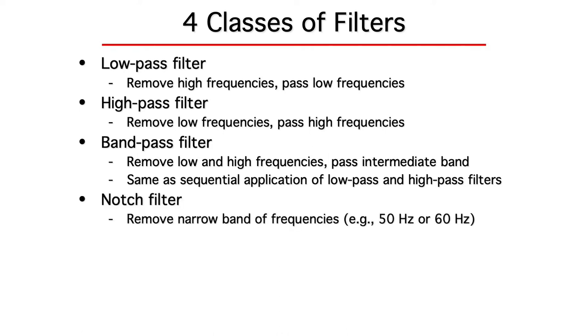Finally, we have notch filters. A notch filter blocks a narrow band of frequencies. For example, if you're in Europe, your AC electricity runs at 50 Hz, and you might want to apply a 50 Hz notch filter to remove the noise induced by the electrical devices in the recording environment. Or you might use a 60 Hz notch filter if you're here in North America.